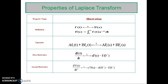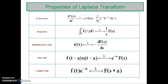The next important property is the first derivative. So, d by dt of f of t, if you obtain the Laplace transform, it results in s into f of s minus f of 0. Similarly, you can write the property for the second derivative and for n derivatives.